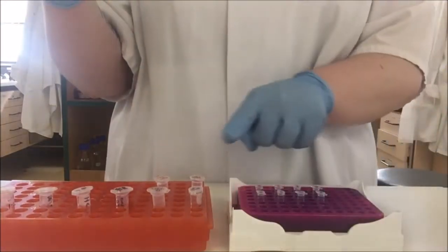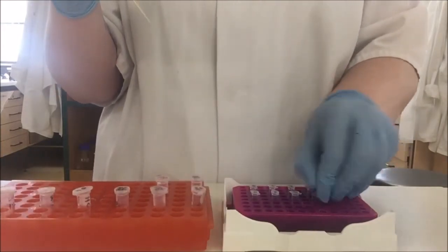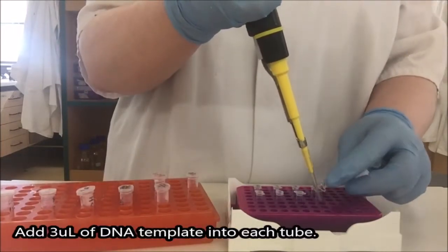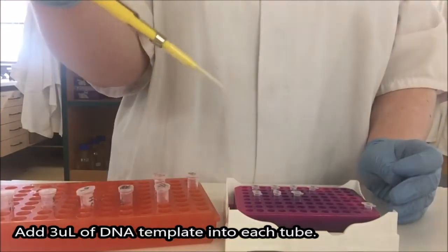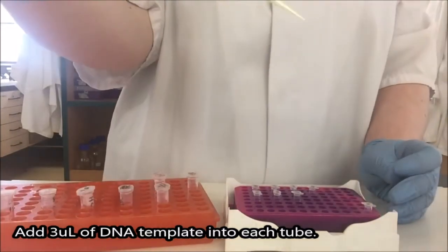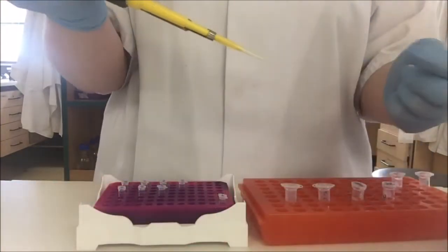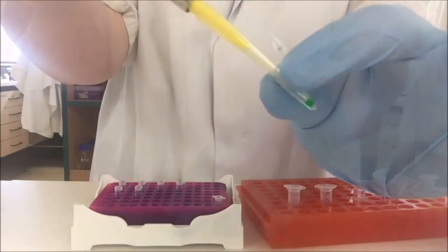And I'm going to add 3 microliters of our first sample into tube 1. As I do this, because I'm working with very small amounts of liquid, I'm going to check that I've actually managed to get everything out of the tip. This is sample number 2, PCR tube number 2. It's a very much smaller tube than our microcentrifuge tube.